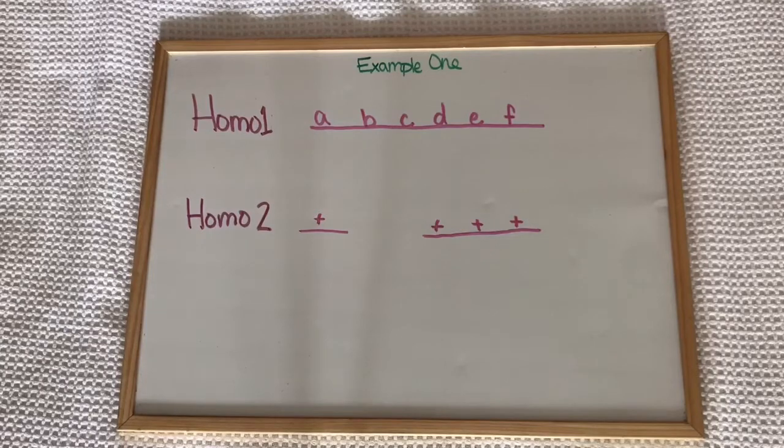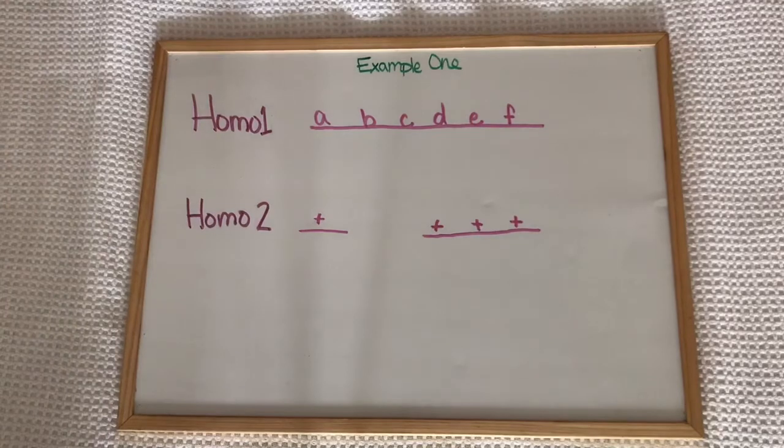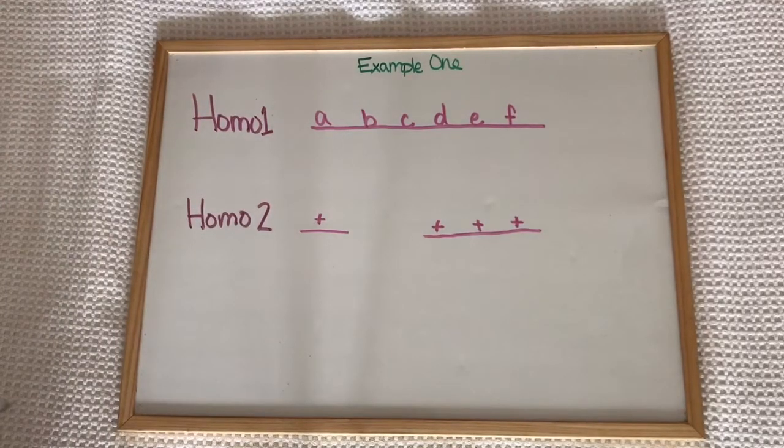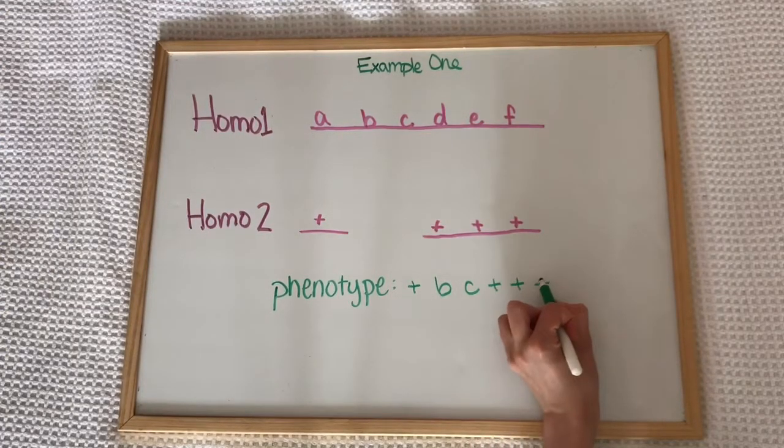For example, the alleles on homolog 1 are recessive in comparison to homolog 2, so none of them will be expressed. However, in this specimen traits B and C are expressed. This is only the case because of a deletion in homolog 2 that spans the B and C positions. Therefore, the phenotype of the individual is dominant B and C dominant dominant dominant.